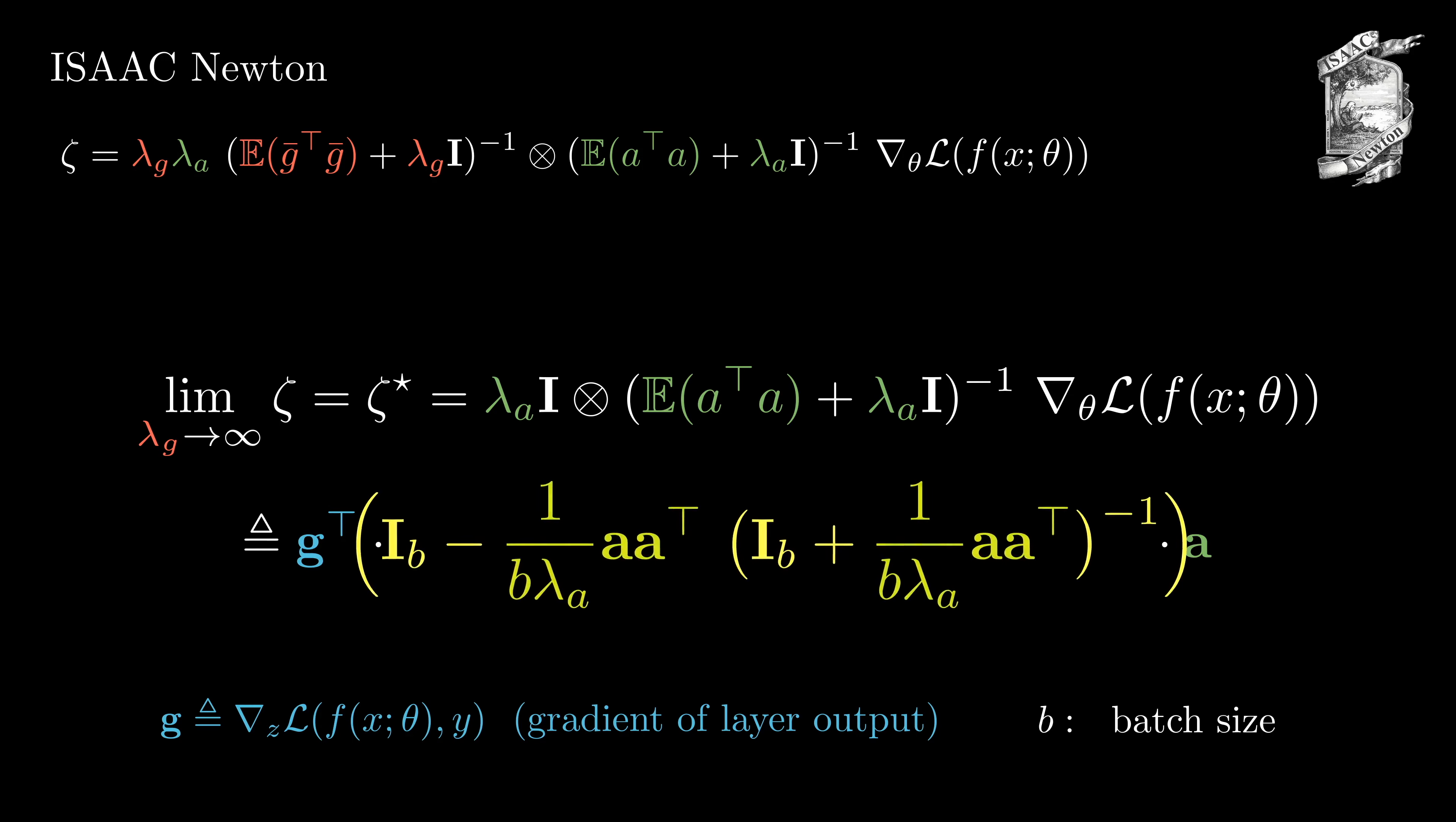We note that g transpose a is the conventional way of computing the gradient update and backpropagation. In between this computation, we interject a matrix of size b times b, which only requires the inversion of a b times b matrix and only depends on a, which means that the cost of our method only scales with the batch size and for mini-batch training, the cost becomes negligible.